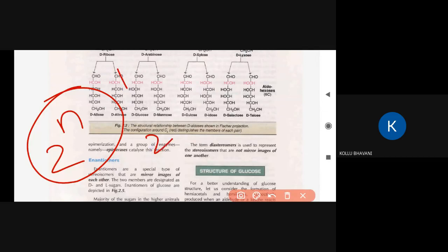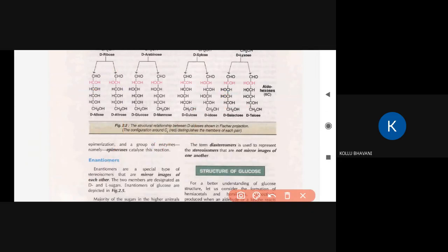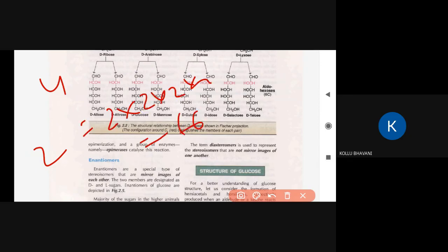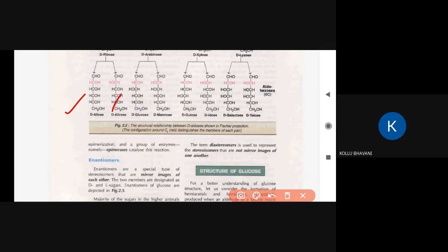With 4 asymmetric carbons, 2^4 equals 16 isomers. These 16 isomers of glucose include: D-Allose, D-Altrose, D-Glucose, D-Mannose, D-Gulose, D-Idose, D-Galactose, and D-Talose, plus their corresponding L-forms.